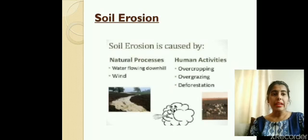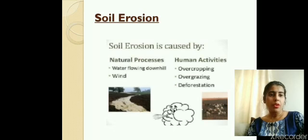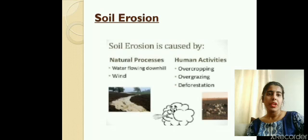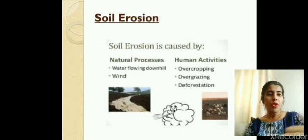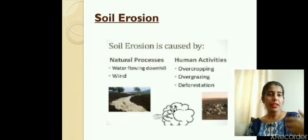There are also many human activities that can cause soil erosion, such as overcropping, overgrazing, and deforestation. Regarding natural processes, continuous flow of water over the soil surface can lead to the removal of the top layer, and if strong winds are blowing they can also take away the top layer of the soil along with them.